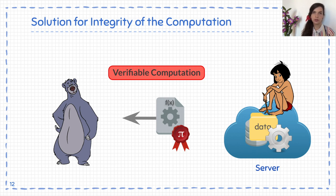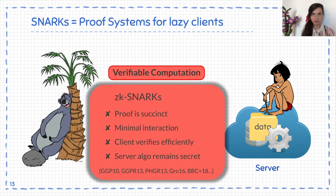Those schemes allow the server to compute an extra proof that the evaluation was done correctly, so Baloo can check that. We have schemes that are even adapted to lazy clients like Baloo — those are zero-knowledge SNARKs that allow verifiable computation with very short proofs, non-interactively, and with minimal overhead for the verification process. The zero-knowledge property also protects the server against curious clients who want to learn parts of the server's algorithms.